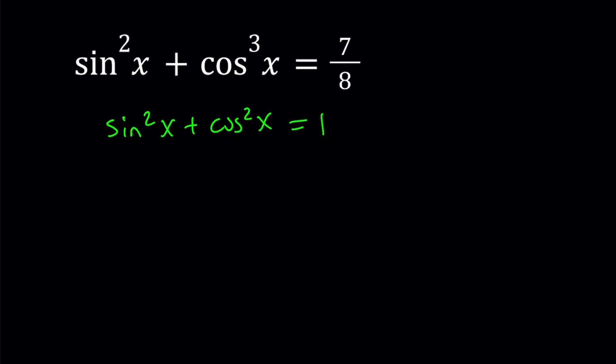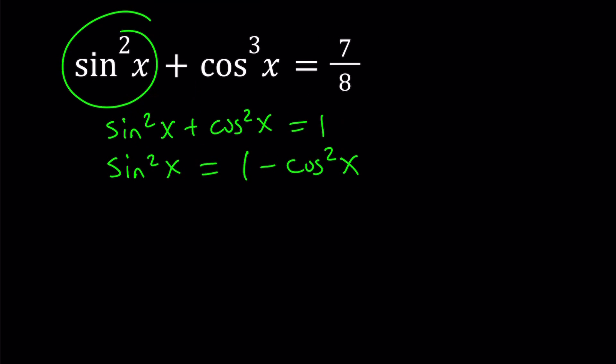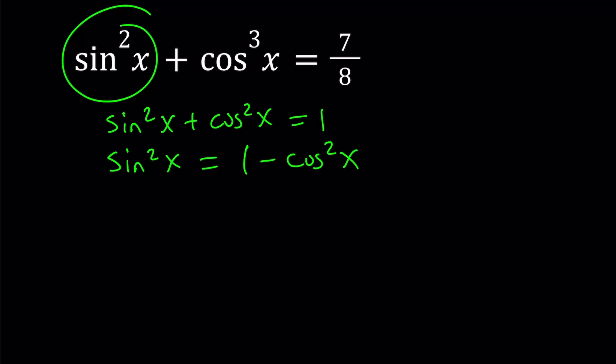And this allows you to replace sine squared x with something. Let's go ahead and do it. Sine squared x can be replaced with one minus cosine squared x. And that gives us a nicer equation. Well, not that nice, but it's okay. It's doable.